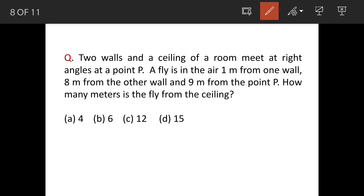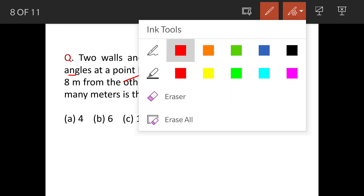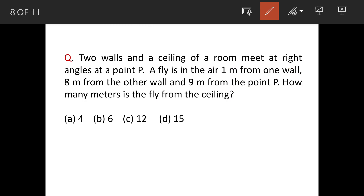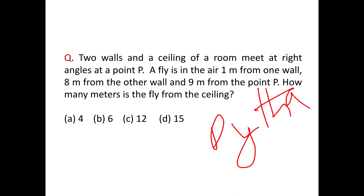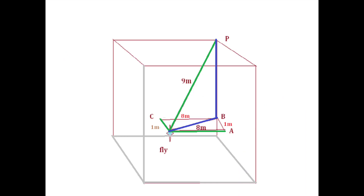Two walls and a ceiling of a room meet at a point P, and the angles made by them are right angles. A fly is in the air, one meter from one wall and eight meters from the other wall, and nine meters from point P. The question is: how many meters is the fly from the ceiling? We need to apply the Pythagorean theorem.